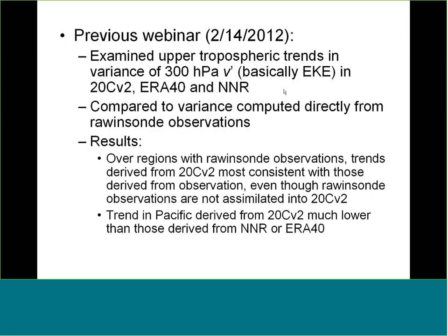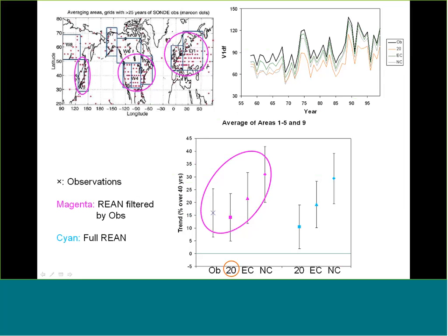Here I highlight the regions over which variances are computed. The dots are the radiosonde stations. The variance computed by radiosonde is shown by black lines, and the three reanalyses are shown by colored lines. Year-to-year variability follows each other very closely. When computing the trend in percentage terms, despite ERA-40 and NCEP-NCAR assimilating radiosonde observations, the trend derived from observations actually agrees best with that derived from the 20th century reanalysis.